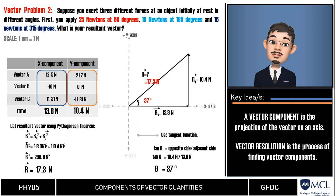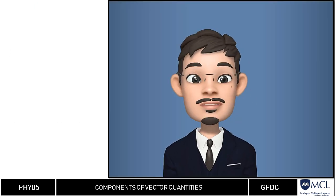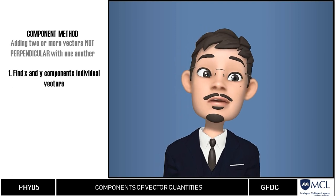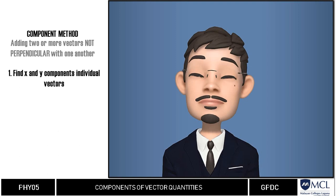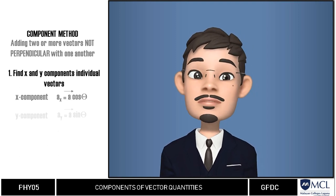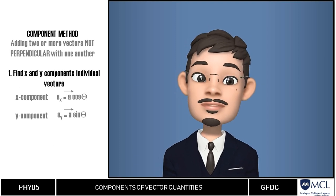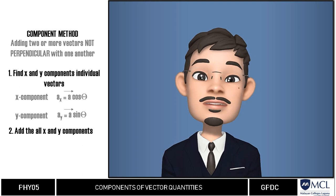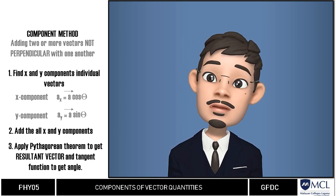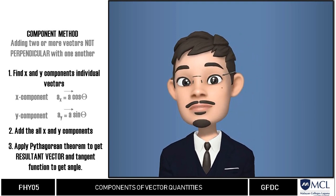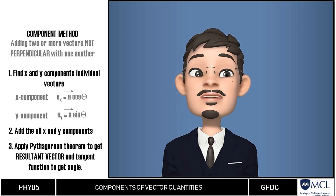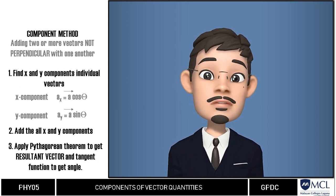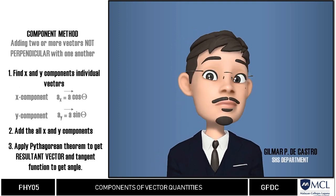What do you think is the direction? You can comment your answer in the comment section below. To review: when adding two or more vectors that are not perpendicular, find the individual x and y components using magnitude × cosine θ for x and magnitude × sine θ for y. Then algebraically sum them to get the final x and y components. Form a right triangle, apply the Pythagorean theorem for the resultant vector, and use the tangent function for the angle. This is Gilmar de Castro — see you in the next video!